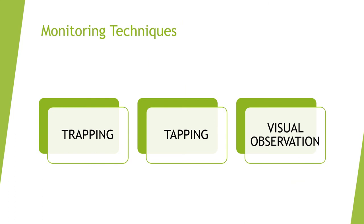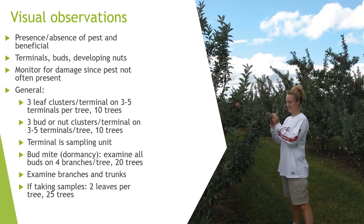There are three main monitoring techniques that one can use in an orchard to look for pests. The main one for hazelnuts is visual observation — just physically looking at the tree. But trapping and tapping are also useful for detecting certain insect pests that may not be as easy to catch with visual observation alone. So we'll go into each one of those individually.